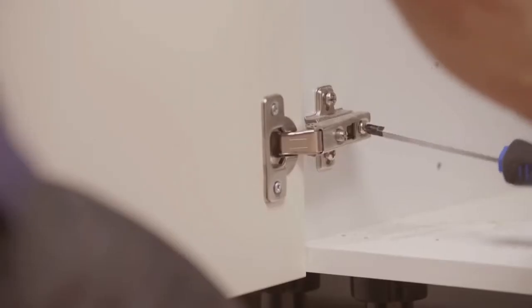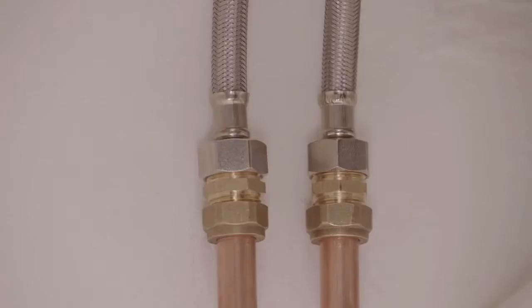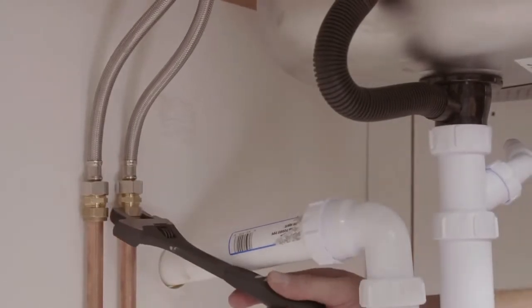To get easy access to the sink cabinet, it's a good idea to remove the doors. Then disconnect the hot and cold water supply to the old tap's pipes. Use two adjustable spanners or a grip if access is more difficult.